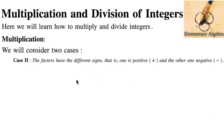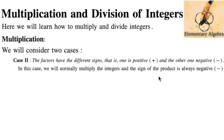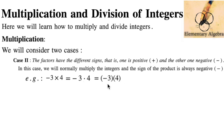Now for Case 2 in multiplication: the factors have different signs — one is positive and the other is negative. Opposite to Case 1, the product is always negative. For example, negative three times four equals negative 12. Likewise, five times negative four: five times four is 20, so the answer is negative 20.